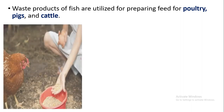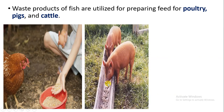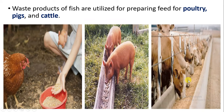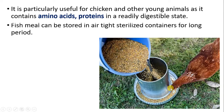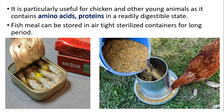The waste produced from fish is also used as food for poultry, pigs, and cattle. Particularly the fish remains are used for chickens and other animals as it contains amino acids and proteins which are easily digested. Fish meal is also stored in airtight containers for a long period of time.